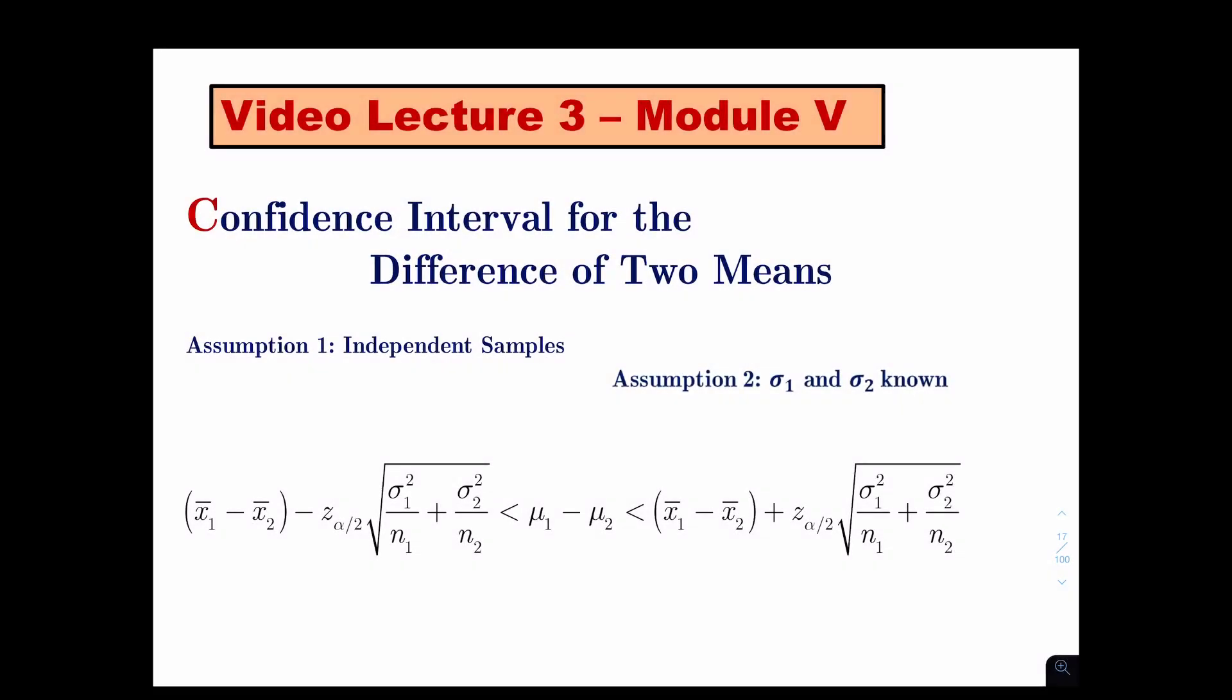Welcome to my third video lecture of my PowerPoint for Module 5. We're continuing our discussion. We've talked about constructing a confidence interval for the mean of one population, sigma known, which uses z-values in the formula. We talked about constructing a confidence interval for a mean when sigma is unknown, which means you use s in the formula to estimate the mean.